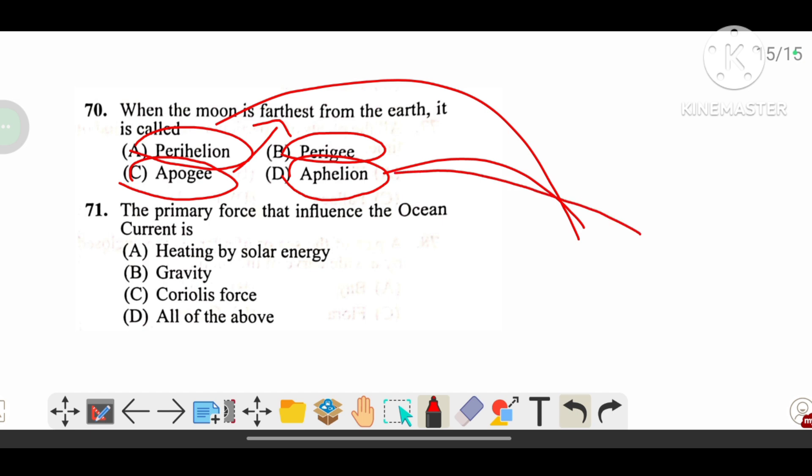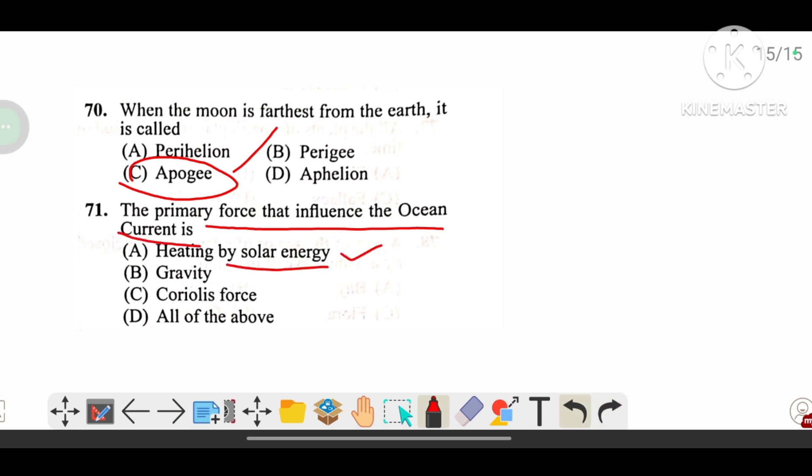The primary force that influences the ocean current is: heating by solar energy, gravity, Coriolis force. The answer is all of the above.